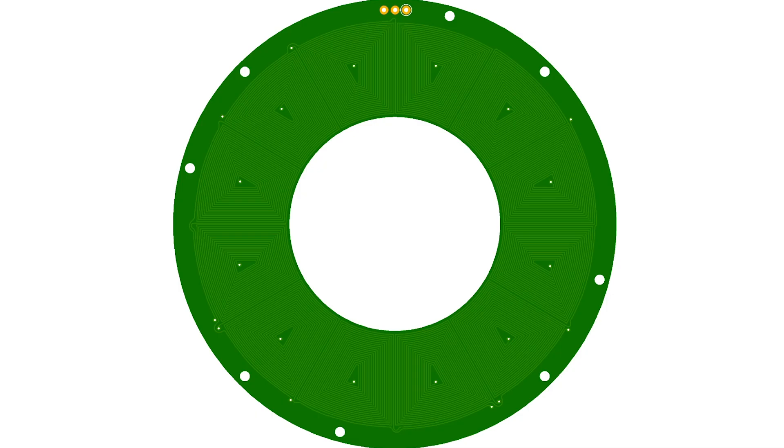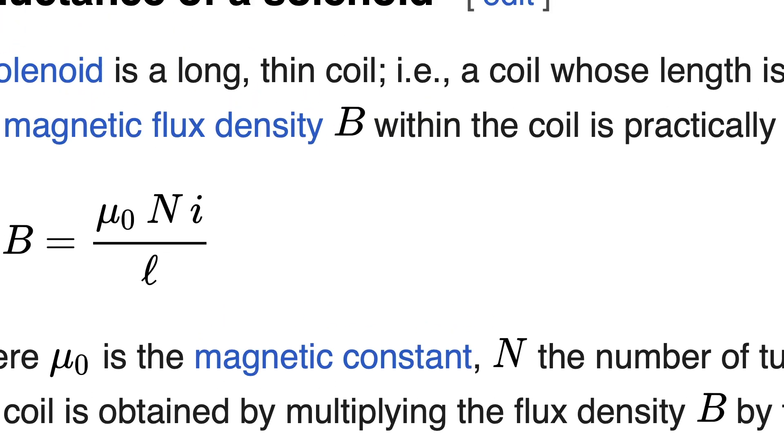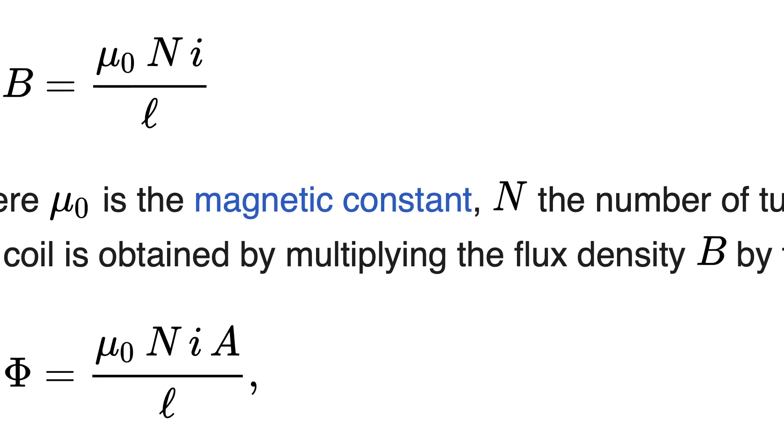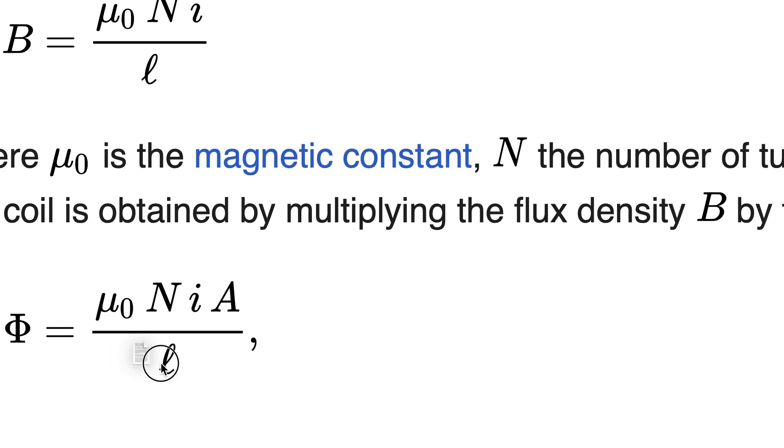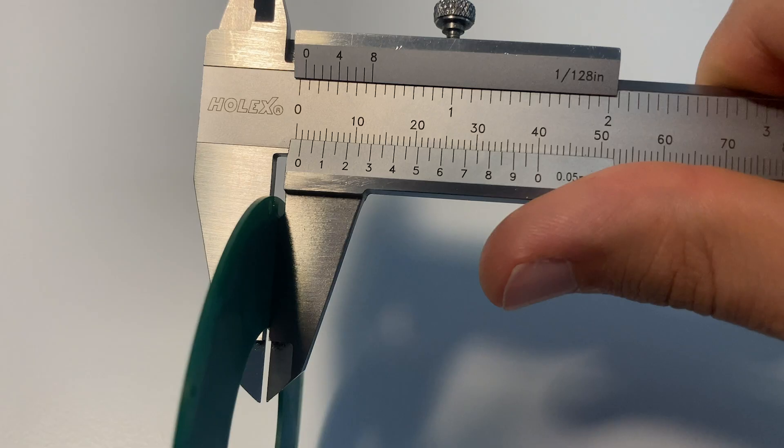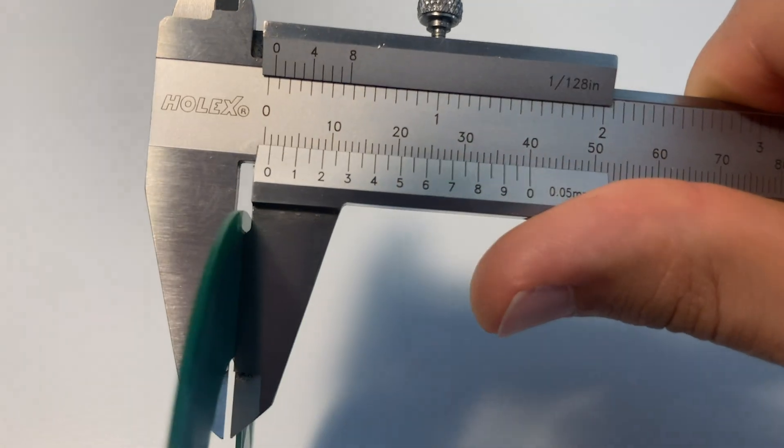This is necessary to keep the current continuously flowing in the same direction and adding up to a stronger total magnetic field. To get a larger force acting on the rotor's magnets, it is important to get the PCB as thin as possible. I therefore selected 1mm thickness,